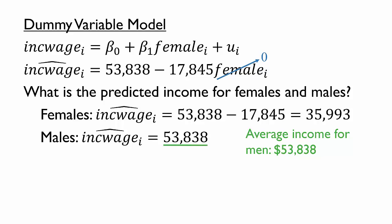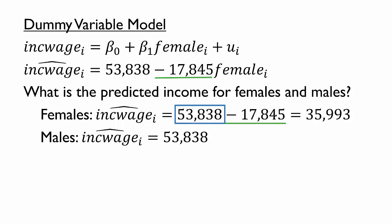First, the average income for men also matches the model's estimated intercept, or beta 0 hat. Men have a value of 0 for the model's only independent variable, so the model's intercept represents the dependent variable mean for this group. What about the estimated beta 1 coefficient of negative 17,845? Note that this was the amount we subtracted from the predicted male income to calculate the predicted female income. In other words, this coefficient estimate is the difference in average incomes between females and males, or the female-male income gap.